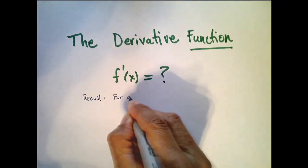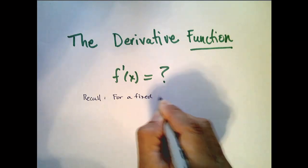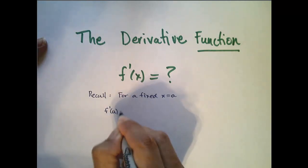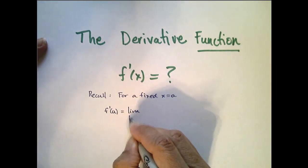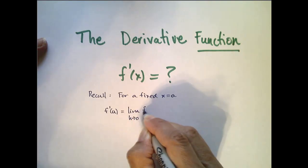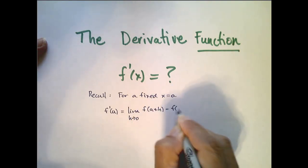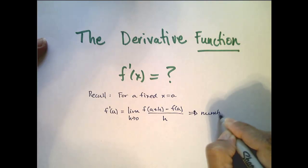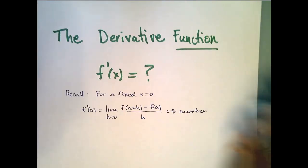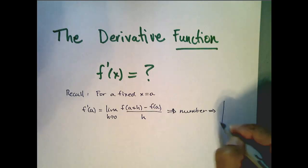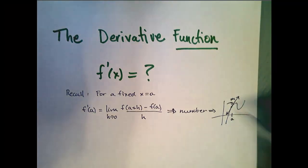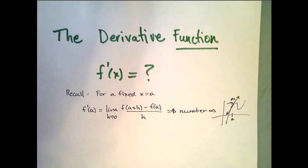So for a fixed x equal to a, so here's a fixed a value, then f prime of a is equal to the limit as h approaches 0 of f of a plus h minus f of a all over h. And remember this produced a number if that limit existed. And graphically what it represented was the slope of the tangent line to the function at a. So it gave us a number.